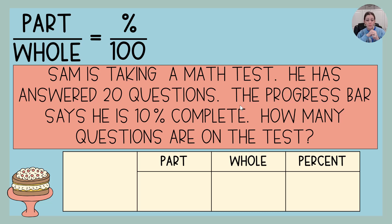So we need to take this question and use it to fill in the parts of that equivalent ratio up there in the top left. One thing you have to know though is that one of those pieces, part, whole, or percent, one of these will be missing. You will only have two out of the three.